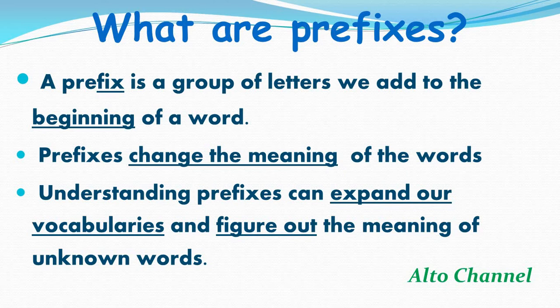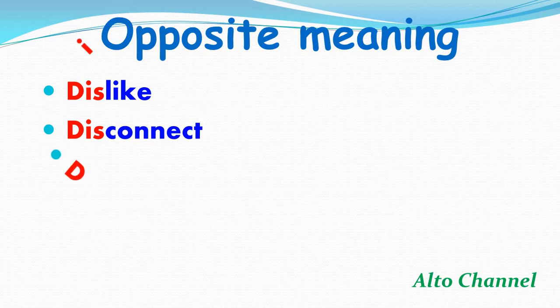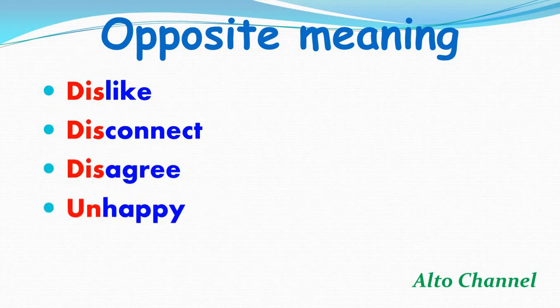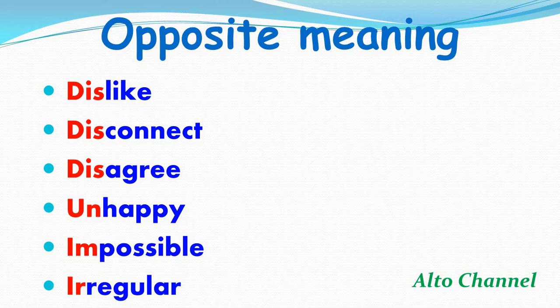Now let's see the meanings of prefixes. One of the meanings is opposite or negative. The first example is 'dislike'. The root word is 'like', and if you put the prefix 'dis' at the beginning, the meaning will be the opposite. So the meaning of 'dislike' is hate.